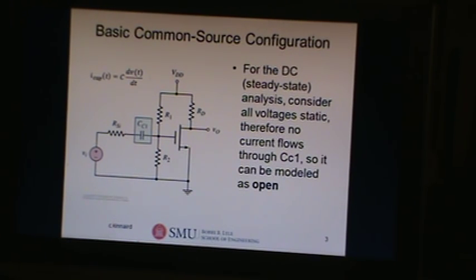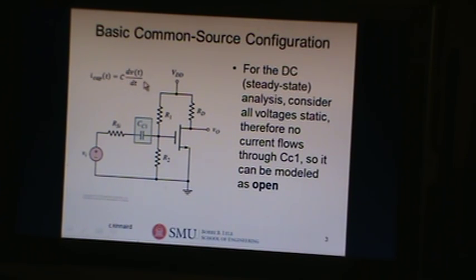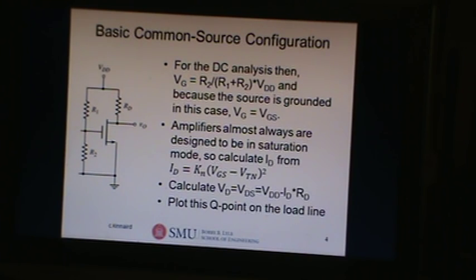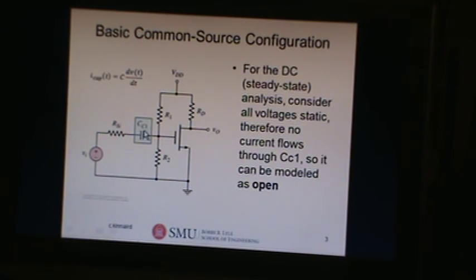We'll start off with the DC analysis. Remember that the current through a capacitor depends on how big the capacitor is and how fast the voltage across it is changing — that's dv/dt from circuit theory. For DC steady state analysis, dv/dt is zero, so no current goes through the capacitor regardless of its size. Therefore, for the DC solution, I'm going to treat this capacitor as an open circuit, which means I can get rid of that whole left side — it's decoupled because the capacitor is open to unchanging voltages.